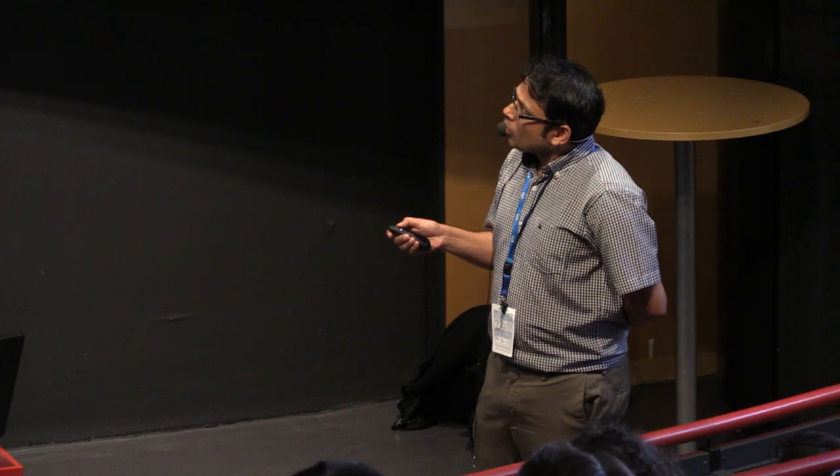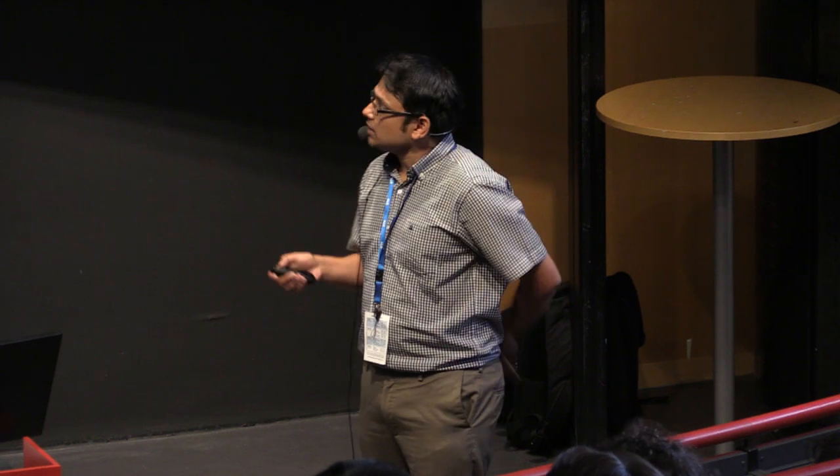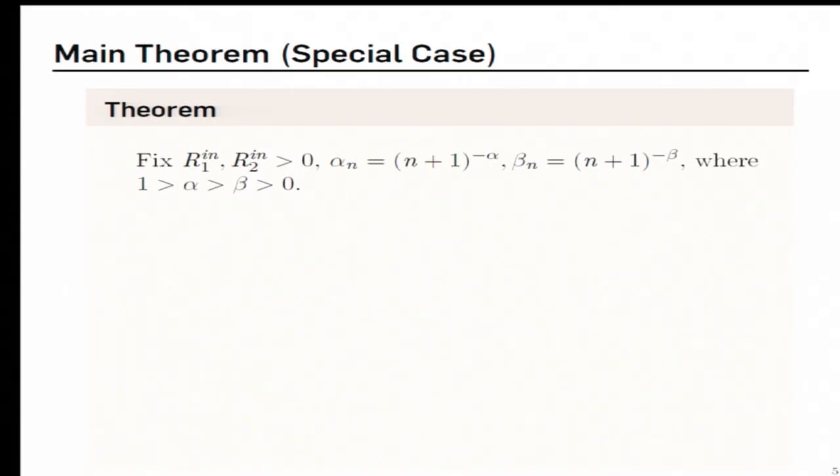Now, keeping this in mind, let me present our first main result. We call this a special case because our result applies for generic step size sequence. But here I present only for the step size sequences of the form alpha N equals 1 over N plus 1 to the power alpha and beta N equals 1 over N plus 1 to the power beta. So we have some assumptions on the step sizes. This translates to a condition of the following form. That is, we require that this constant over here be bigger than this constant and both of them lie between 0 and 1.